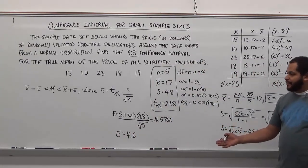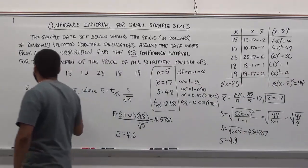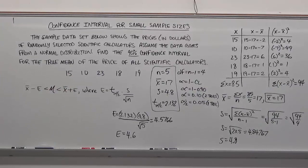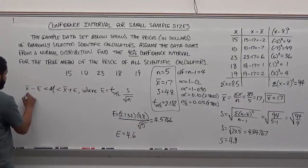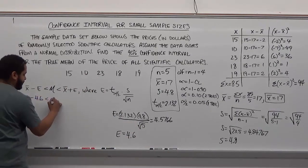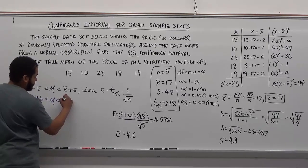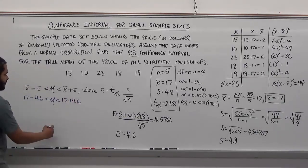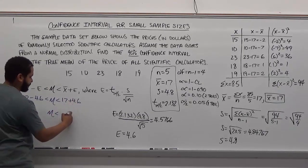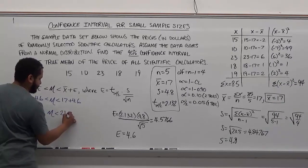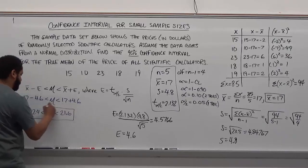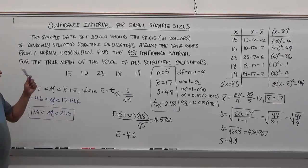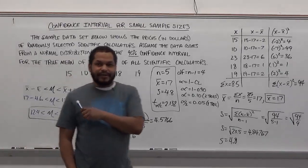And we have our margin of error. And now what we need is our confidence interval for the true mean of the price of all scientific calculators. And so we're taking our x bar, which is 17 as our average. So we have 17 here, take away 4.6. This is less than the true mean is less than 17 plus 4.6. This is the easy part, because we're just adding the value. We just add 17 plus 4 is 21, add the .6 to it. And this side, 17 minus 4.6, which is going to give us 12.4. So here we can see the confidence interval runs from 12.4 to 21.6. And this represents the true mean of the prices of all scientific calculators. And we're 90% confident. Thank you.